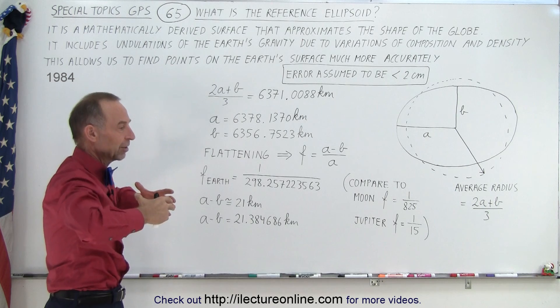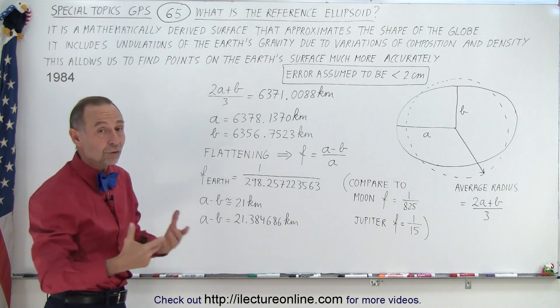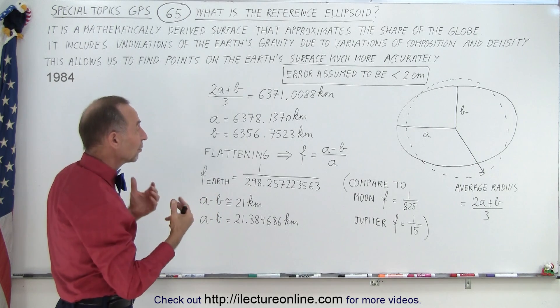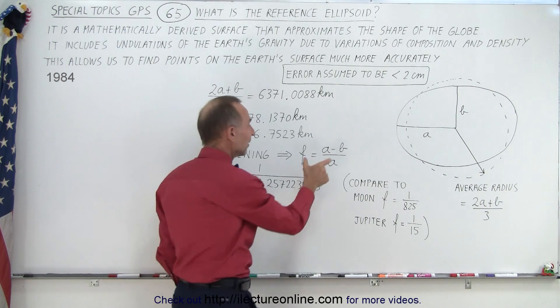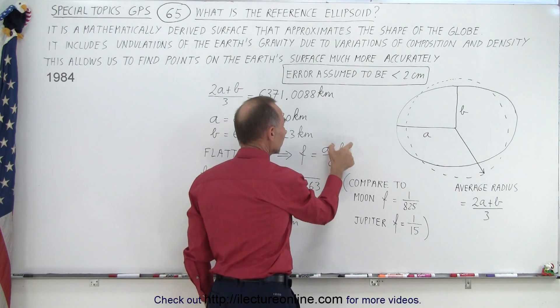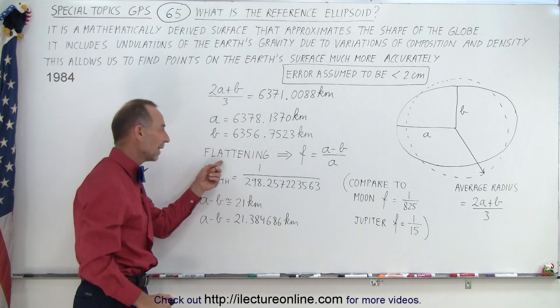And therefore, things tend to get pushed out in that direction due to Newton's first law. And therefore, we need to know what the ratio is between essentially the difference between the semi-major axis and semi-minor axis divided by the semi-major axis. And that's called the flattening.